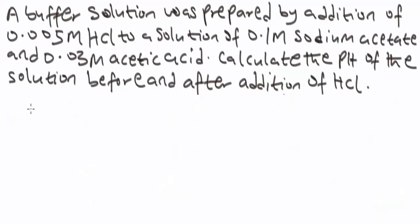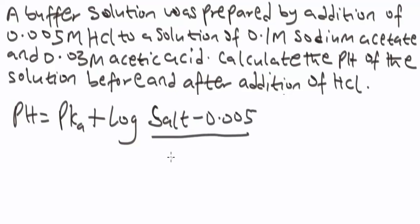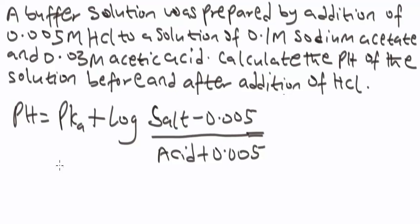Now for the pH after addition of 0.005 mol hydrochloric acid: pH = pKa + log([conjugate base − 0.005] / [acid + 0.005]). Note that when a base is added, you add it to the salt and subtract it from the acid. Whereas when an acid is added, you add it to the acid and subtract it from the conjugate base.